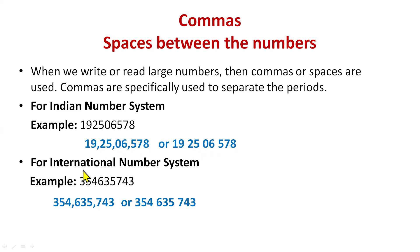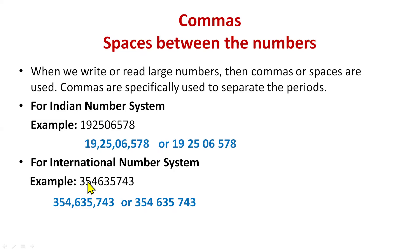For the international system, the ones period has three digits, the thousands period has three digits, and the millions period has three digits — so commas are placed after every three digits uniformly. In some books spaces are used instead of commas. The basic difference: Indian system uses three then two-two digits; international uses three-three-three digits.